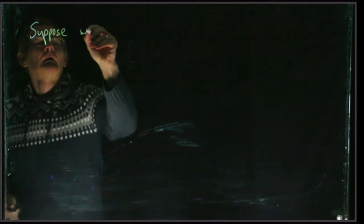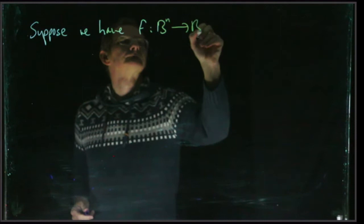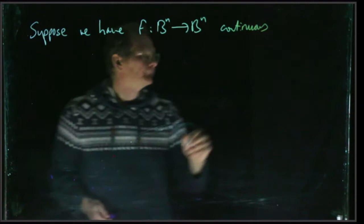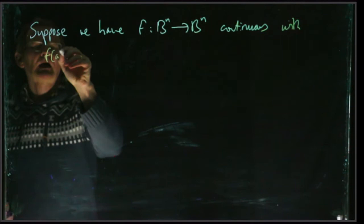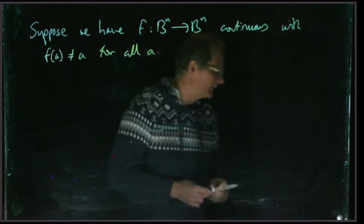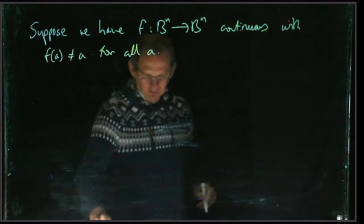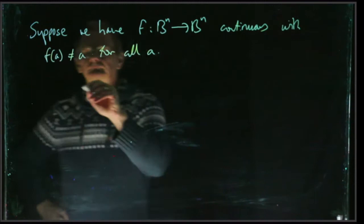So now to prove Brouwer's theorem, suppose for a contradiction we've got f from B^n to B^n, continuous, with f(a) different from a for all a. Remember Brouwer's theorem says that there always exists some a with f(a) equals a, so if we can prove that this is impossible, then we've proved that.